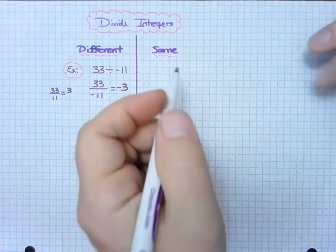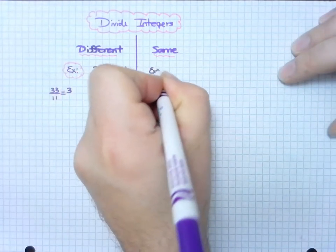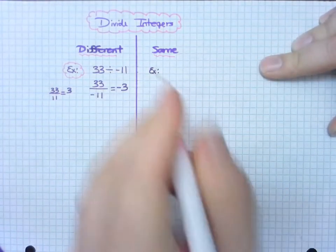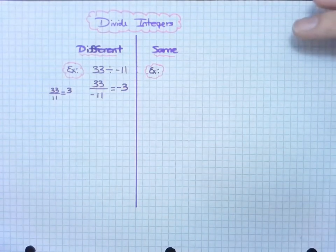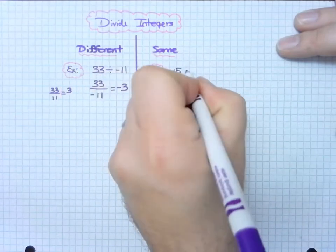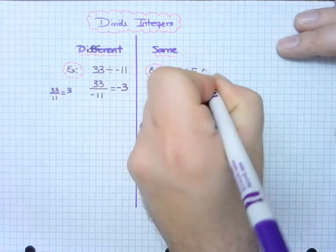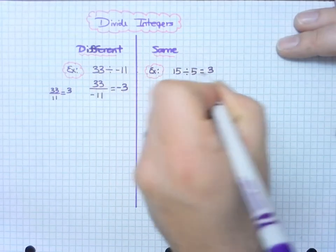Finally, if we have a situation in which we have the same sign, one of which we're very familiar with, 15 divided by 5. Well, we know that's positive. They're both positive, so it's positive.